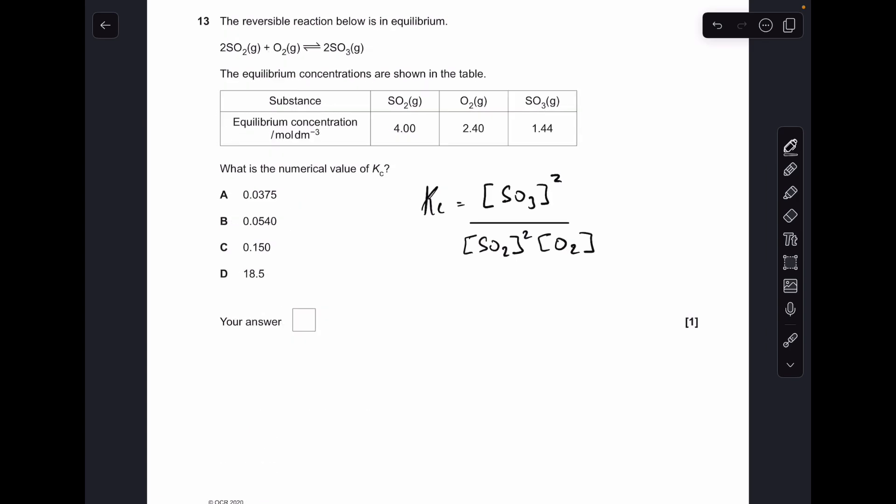Number thirteen: to work out Kc we obviously need the expression, so there it is there. All I'm going to do is replace the concentration terms with the numbers in the table. So that gives an answer of 0.054, option B.